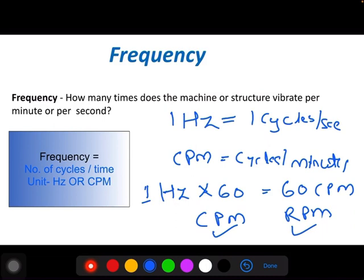For example, if you measure the heartbeat, you can have 100 heartbeats per minute. Similarly, if the machine rotates at 1500 RPM, then you can call it 1500 RPM.